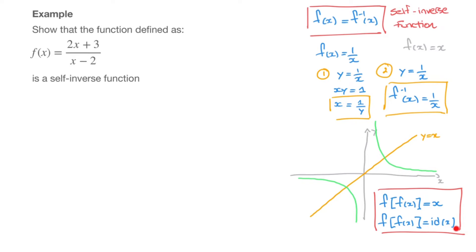If you haven't seen id of x before, let me clarify with a few examples. Id of 3 is just equal to 3. Id of 0 is just equal to 0. And id of negative 50 is just equal to negative 50. In other words, the id function, id of x, is just equal to x. Which is why you may come across either one of these two notations.